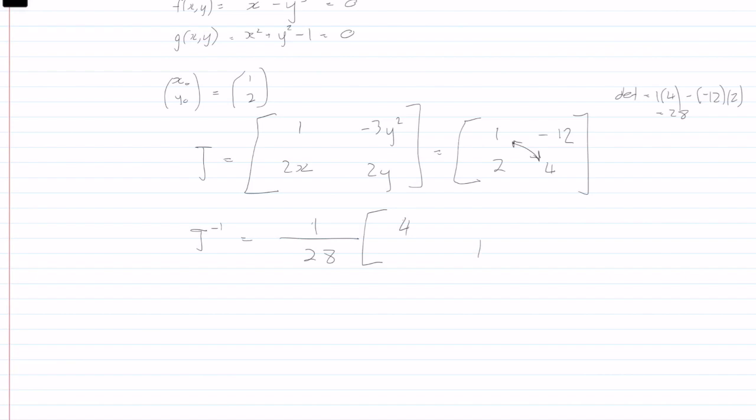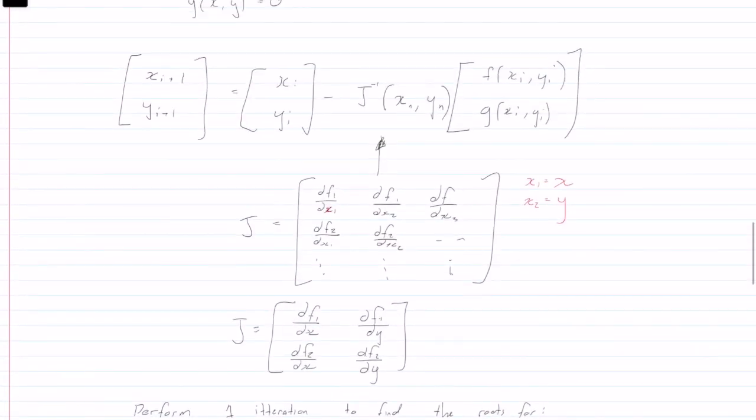and you negate the other diagonal. So we're left with minus two and 12. Cool. So now we have the inverse of the Jacobian.